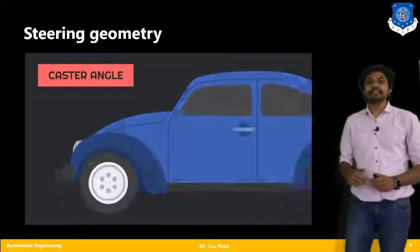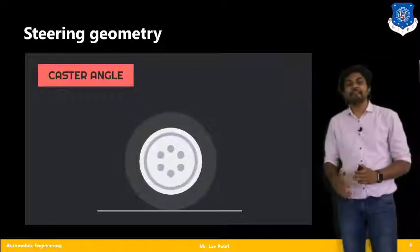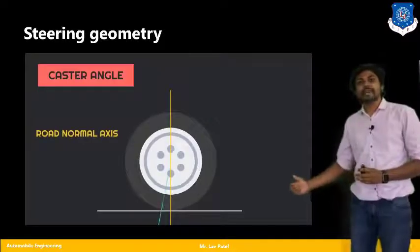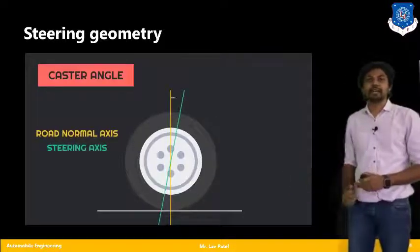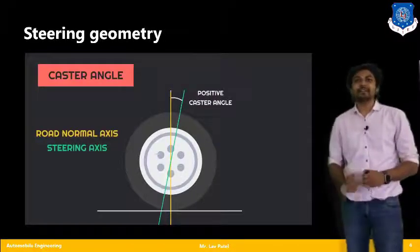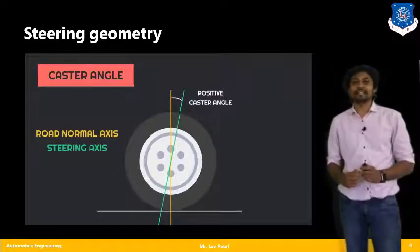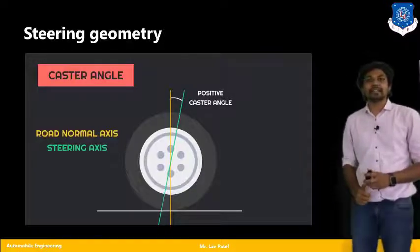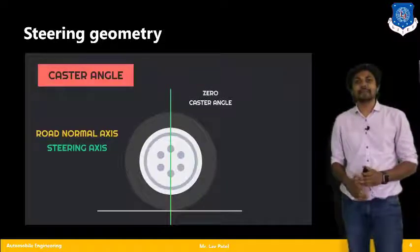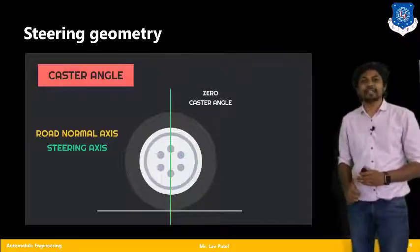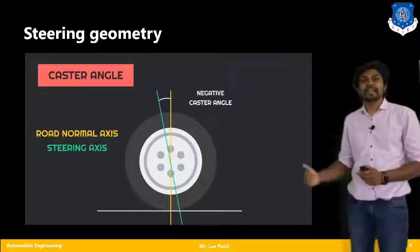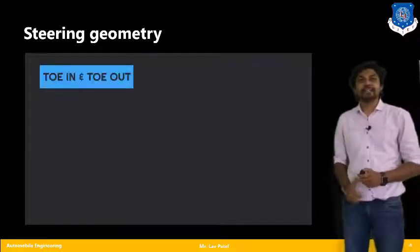The second parameter is the caster angle. For caster angle, we view the vehicle from the side. We have the road normal axis shown in yellow and the steering axis shown in green. The angle between the road normal axis and steering axis is called the positive caster angle. There are three types: positive caster, normally used in cars, motorcycles, and cycles; negative caster; and zero caster.